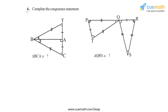In question 6 of this exercise we have to complete the congruence statements for each of these two figures. In the first figure, the statement is triangle BCA is congruent to what triangle, and for the second figure we have the statement triangle QRS is congruent to what triangle.